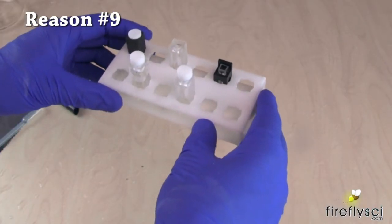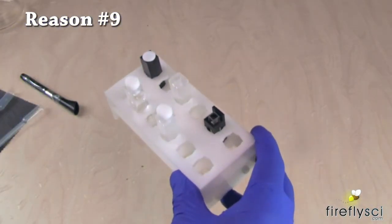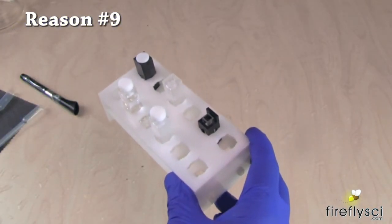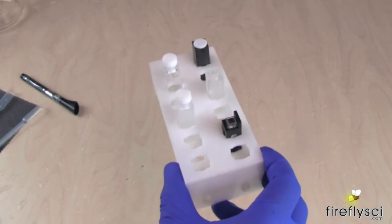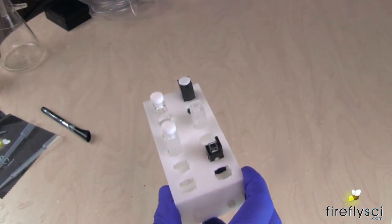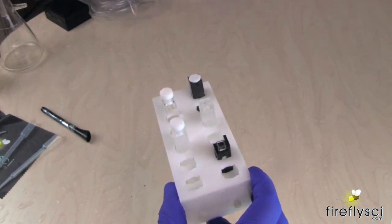Reason number nine, easy to move multiple cuvettes at one time. When working with more than one cuvette, it can be tricky when you have to transport the cuvettes to a different lab. By using a cuvette rack, it is easy to put all your cuvettes in the rack and safely move them.